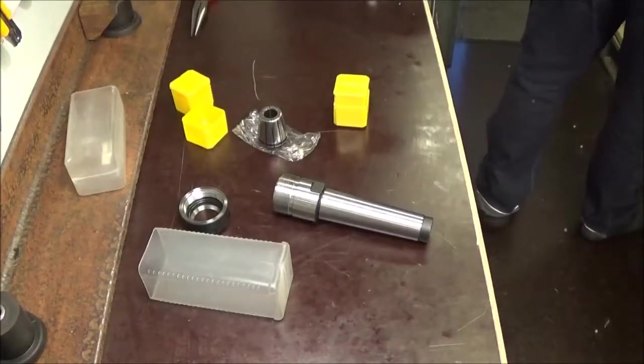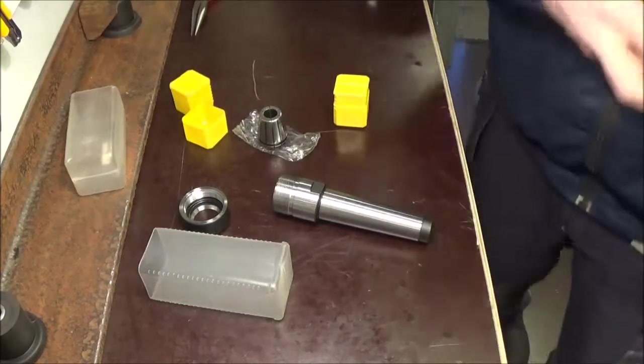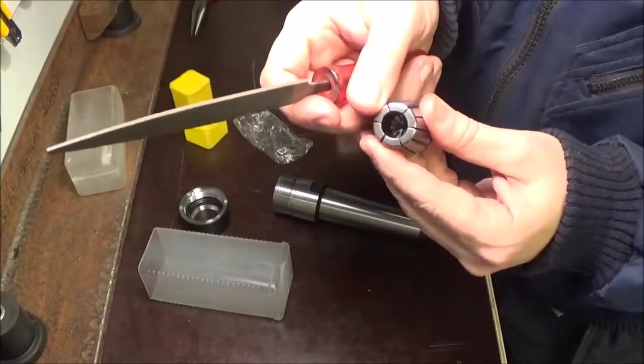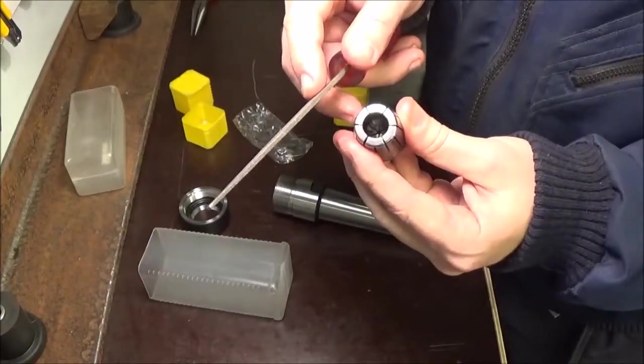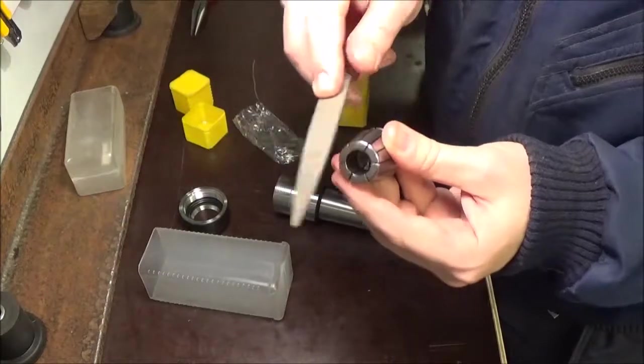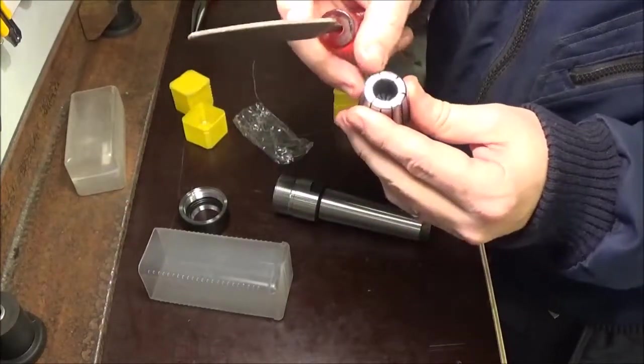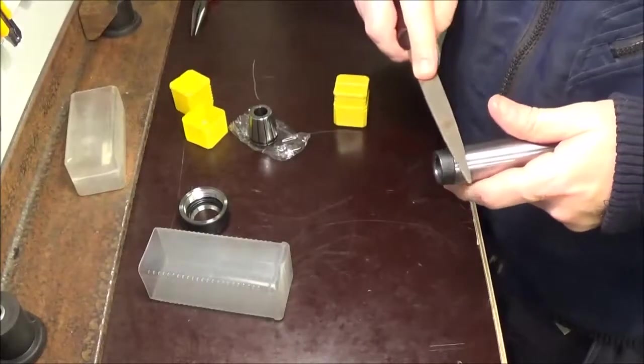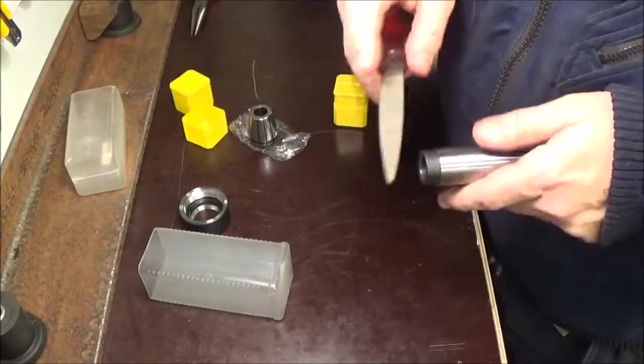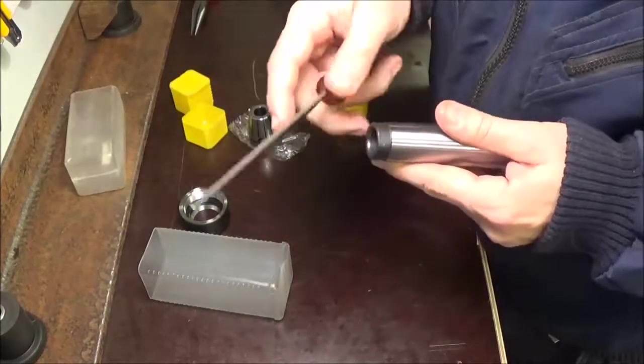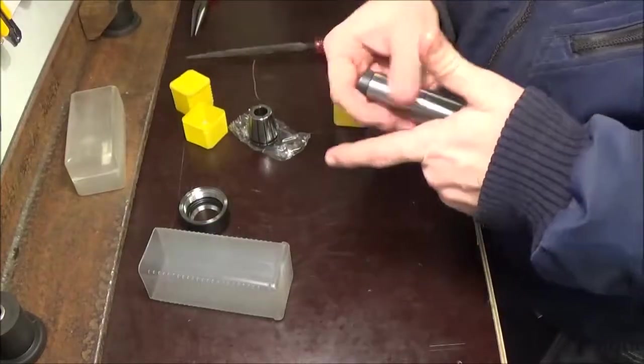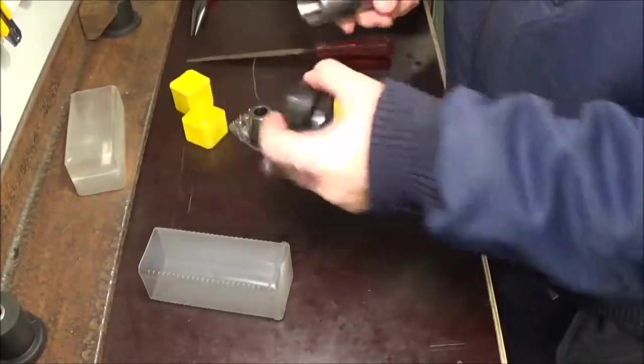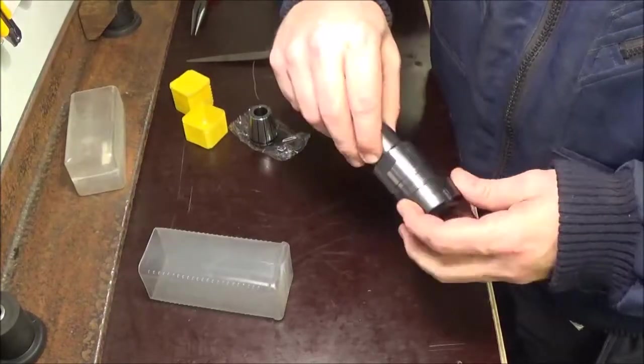Let me grab a file and test whether these are actually hardened. Not as hard as I'd like, that's for sure—it's taking some material off, it's certainly biting. Well, what can I expect for two bucks a pop? The finish is coming off on that. This seems harder—this file is just skating on top. This appears to be hardened and ground, but those collets, not so much.